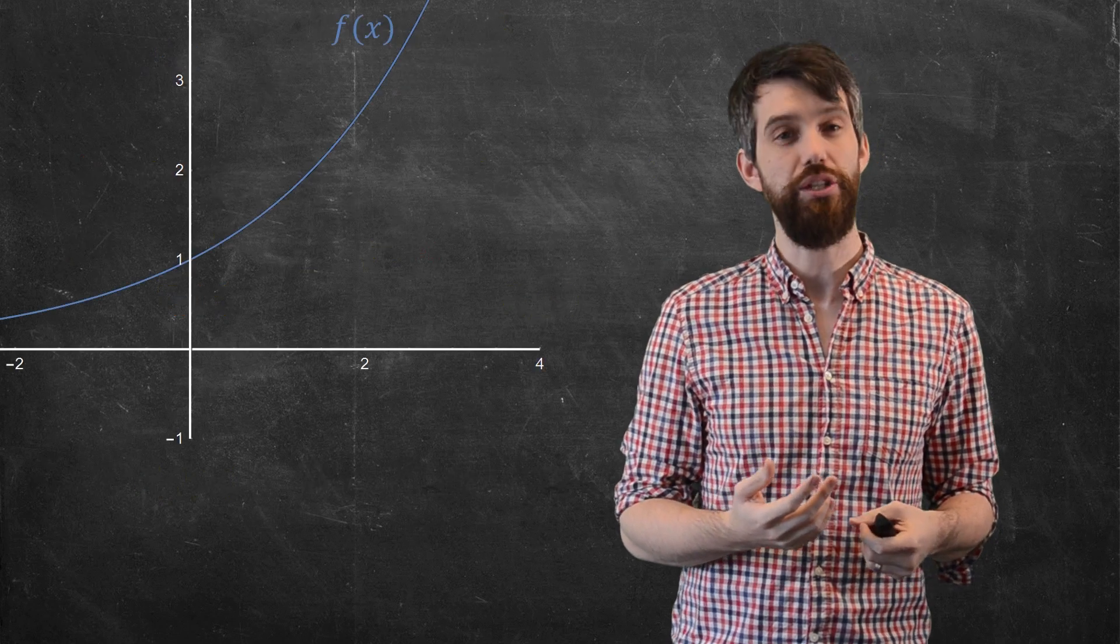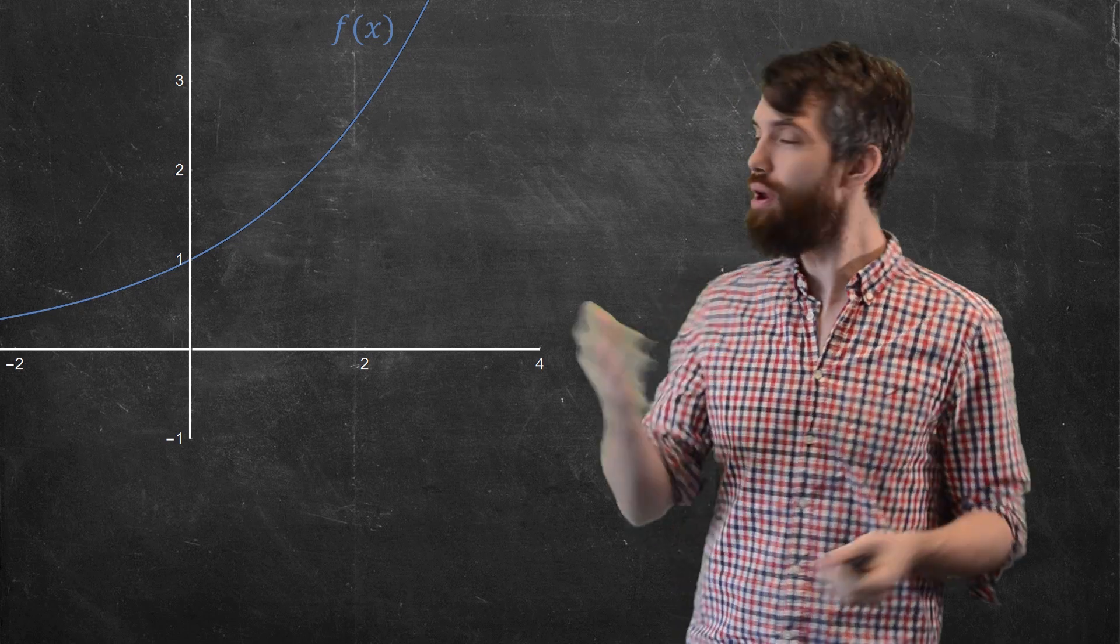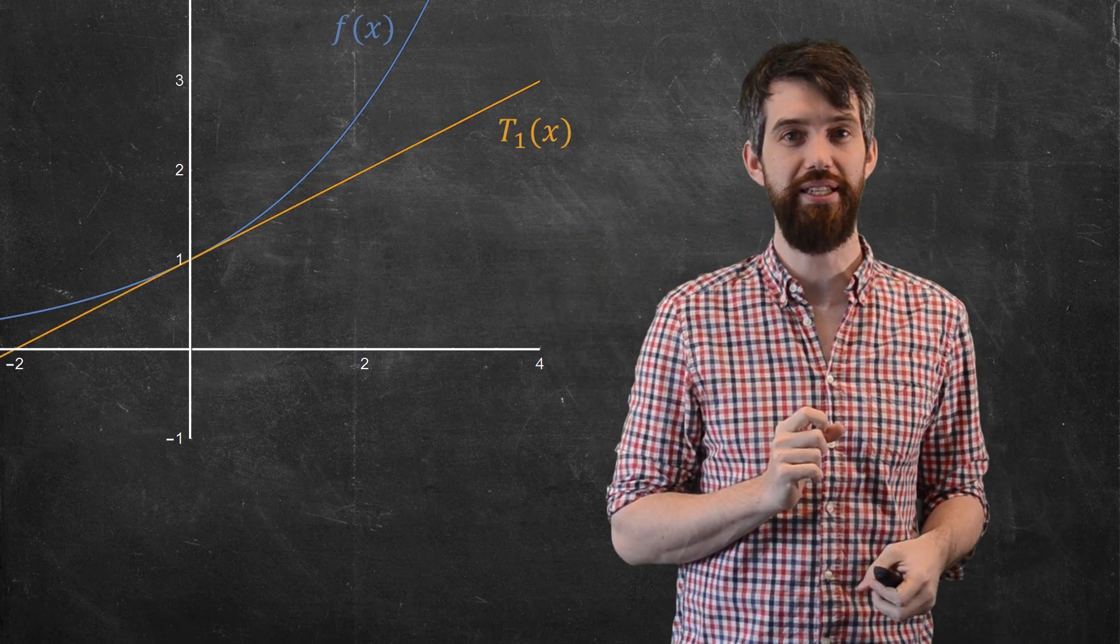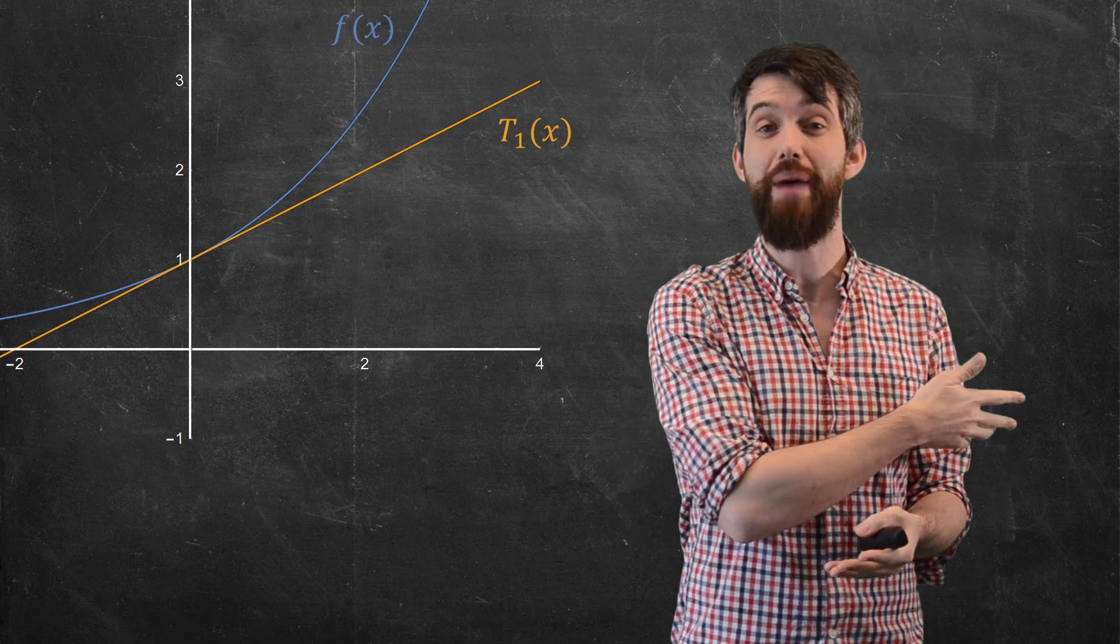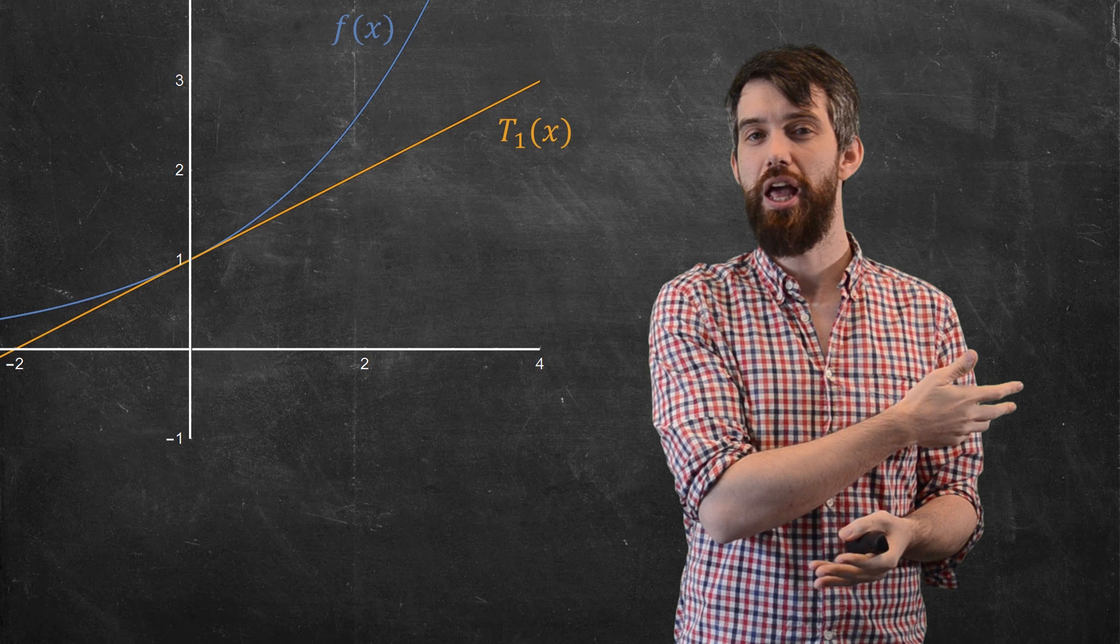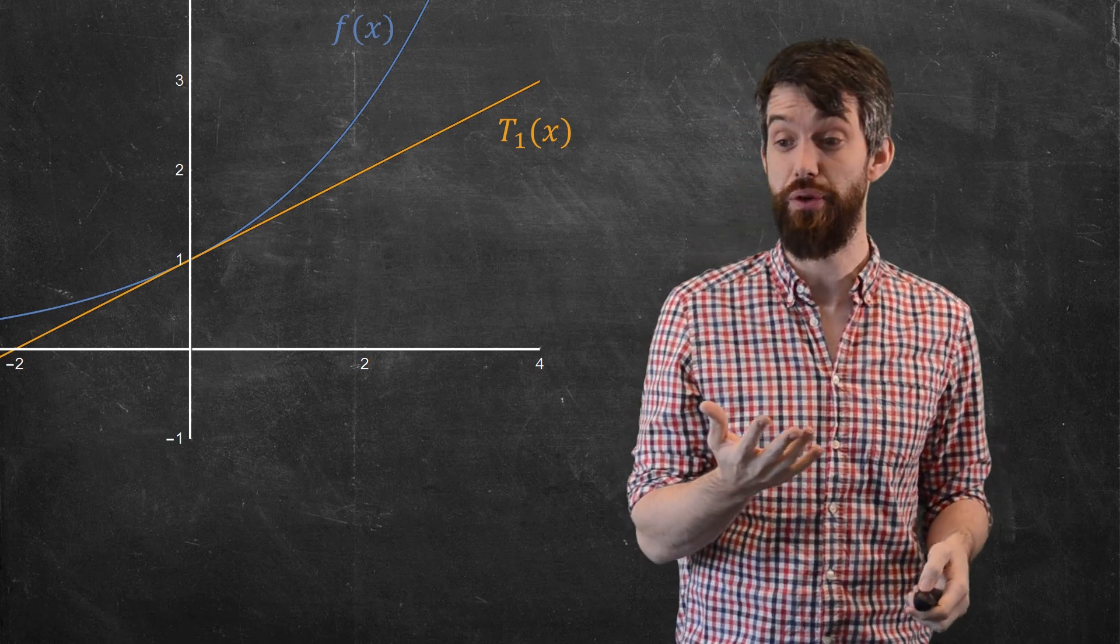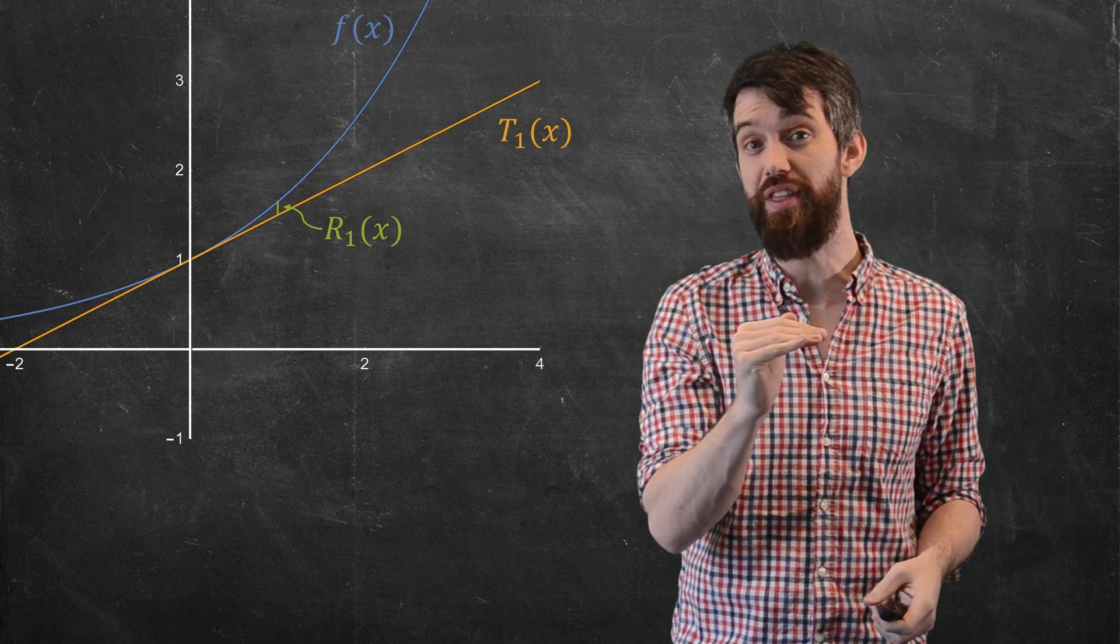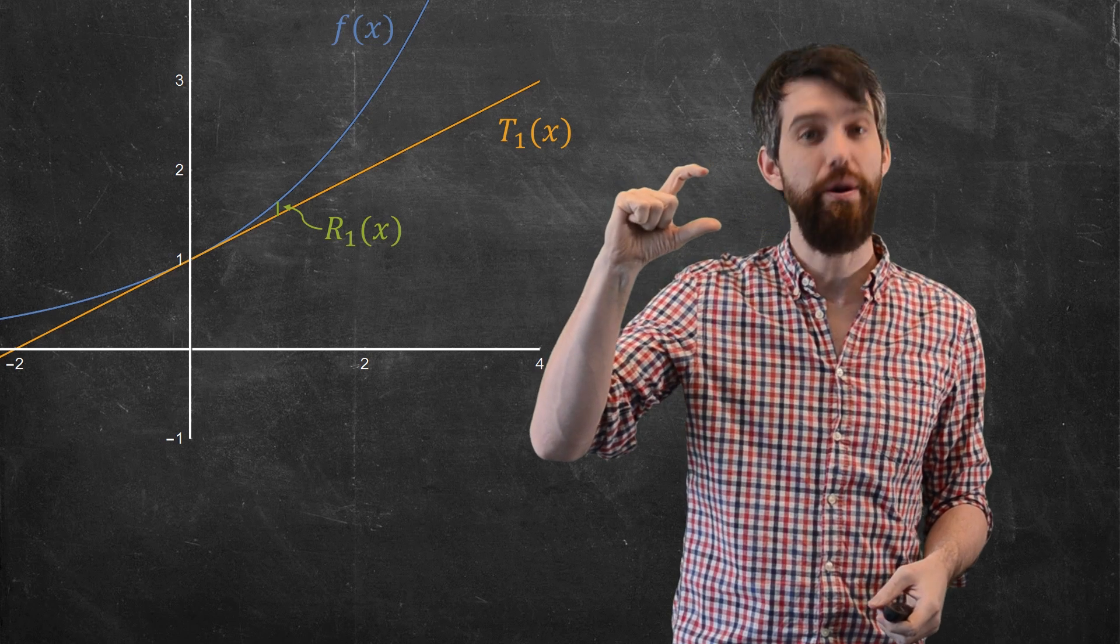The first point that I want to illustrate is that the remainder really is a function of x. So here I've given a generic f of x, and I'm going to put its first Taylor approximation on this. This is T1, and it's just a linear approximation, as we could have done back in Calculus 1. Then the remainder is going to be the difference between these two things. It's this little strip here where I take the f of x, and I subtract off the first Taylor polynomial, and that height, that difference, is my remainder.